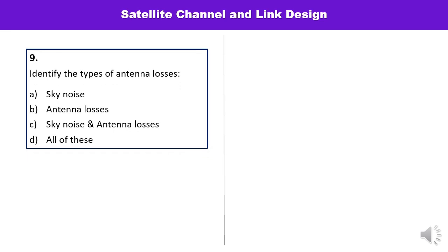Question number 9: identify the types of antenna losses. Sky noise is a type of antenna loss and antenna losses will be considered. Sky noise and antenna losses — all these terms are important and are going to be considered. This is the correct option.